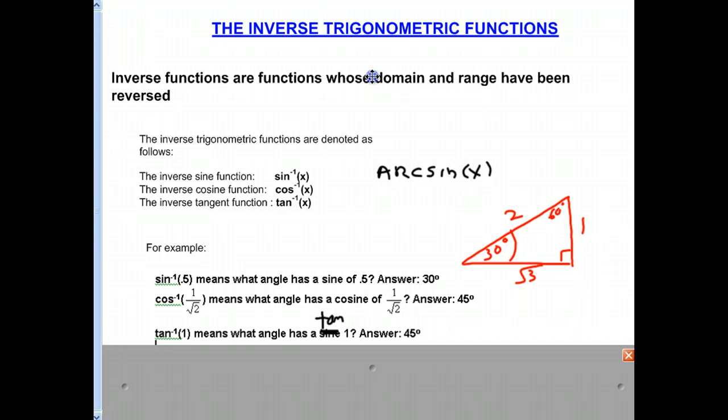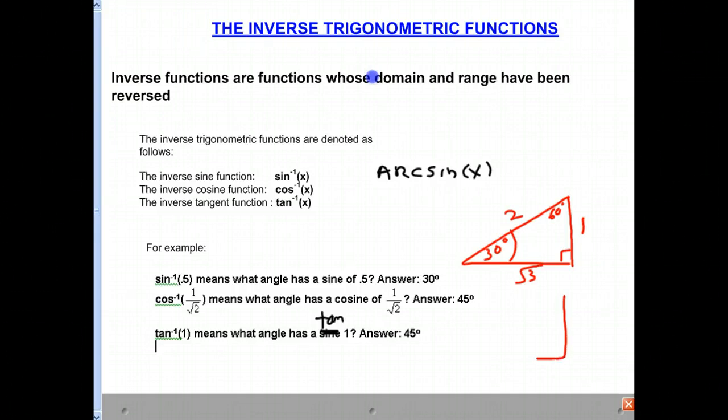If you've forgotten that, we could once again draw our little 45, 45, 90 right triangle. Just to remind ourselves how that works. And we certainly remember in our 45, 45, 90 right triangle, the opposite over the adjacent of our angle, which is the tan of 45, is 1. And so the answer has to be 45 degrees.